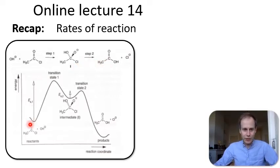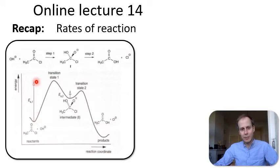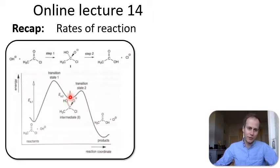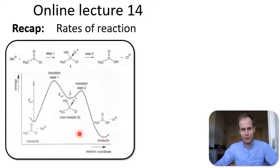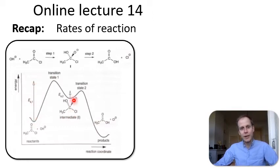The energy landscape for this process is plotted here. In order to produce the intermediate first you need to overcome the activation energy, then you have an energy minimum for the intermediate, and the second activation energy then governs the formation of the products. This is a stepwise process and the rate-limiting step here was the first step because its activation energy is high, while the activation energy for the second step is very low.